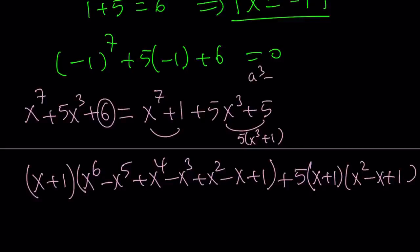So we can kind of write it like this. And then x cubed plus 1 is a sum of two cubes. Therefore, we can factor it like this. x cubed plus 1 can be factored into (x plus 1)(x squared minus x plus 1). I use the formula a cubed plus b cubed.